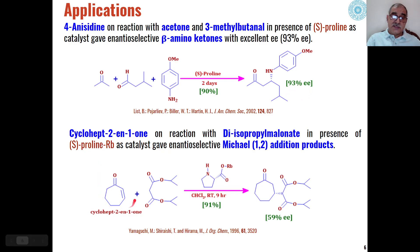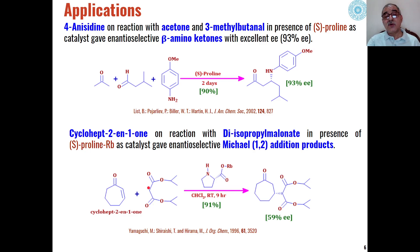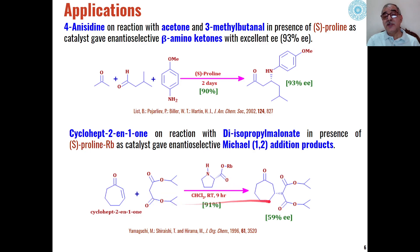Another example is when cyclohept-2-en-1-one, an alpha-beta unsaturated ketone, reacts with active methylene compounds such as diisopropyl malonate. Because of the two carbonyl groups, the hydrogens on that carbon are very acidic and easily removed, which is why such compounds are called active methylene compounds. When these active methylene compounds react with alpha-beta unsaturated ketones in presence of S-proline as catalyst, the active methylene compound asymmetrically undergoes 1,4-Michael addition across the carbon-carbon bond to give ketonic products in 59% yield.